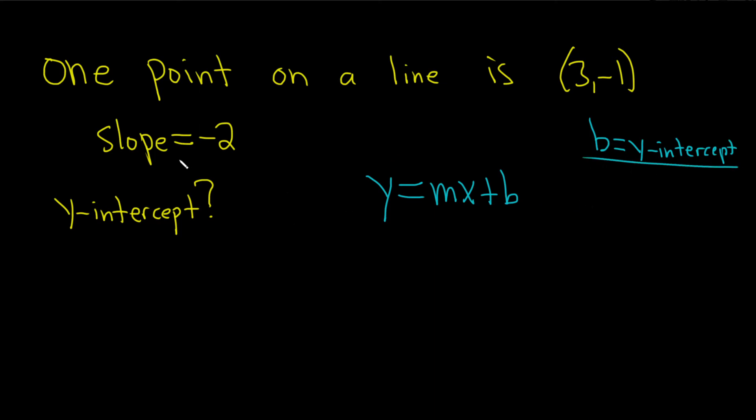So let's plug in what we know. We know the slope is -2, so that is going to be m. So y equals -2x plus b. Okay, so we've used this information.